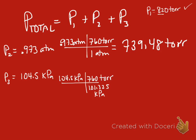For my third pressure, 104.5 kilopascals, I have the conversion factor of 760 torr over 101.325 kilopascals, and I get 783.8144584 torr. Now, I can add all 3 of my pressures together. And a quick word of caution.